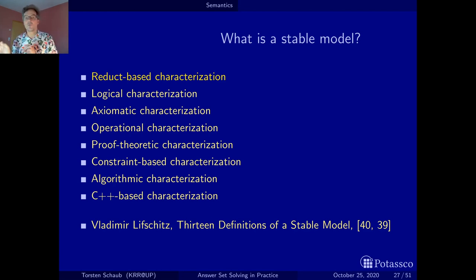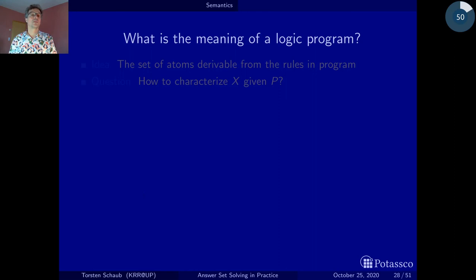We will now start with the very first characterization that characterizes stable models in terms of sets as the basic ingredients. Again, I will sometimes make a relation to logic, but don't despair. This is not essential at all. This is just for those people among you who know a bit about logic that they get a point of reference to other logics or classic logic that is around. So what is a stable model can actually be traced back to the question, what is the meaning of a logic program? And this will be next. Thank you.